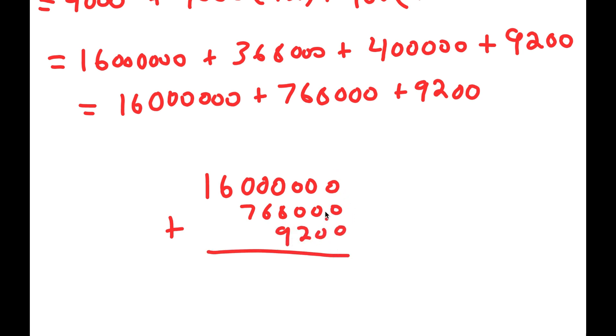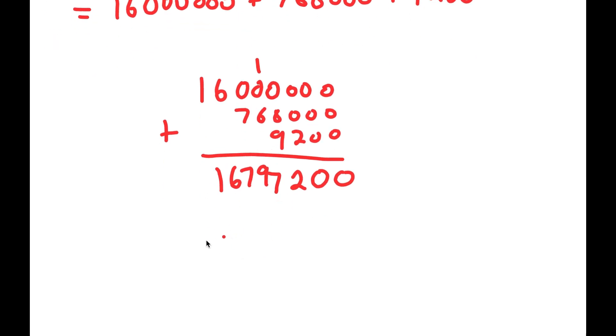Well, let's do first row. 0 plus 0 plus 0 is 0. Second row, 0 plus 0 plus 0 is 0. Third row, 0 plus 0 plus 2 is 2. Fourth row, 0 plus 8 plus 9 is 17, we're going to carry the 1. Fifth row, 1 plus 0 plus 8 is 9. Sixth row, 0 plus 7 is 7. Seventh row, I just have 6. And eighth row, I have 1. So I get 16,797,200.